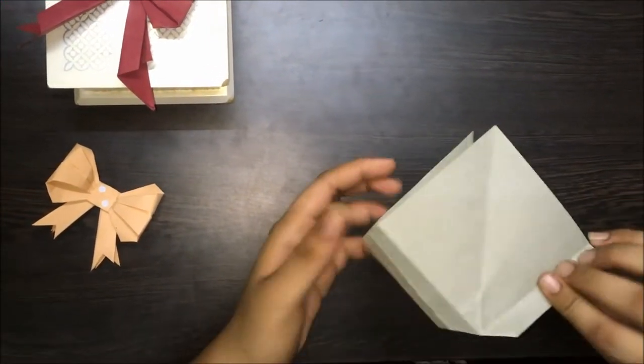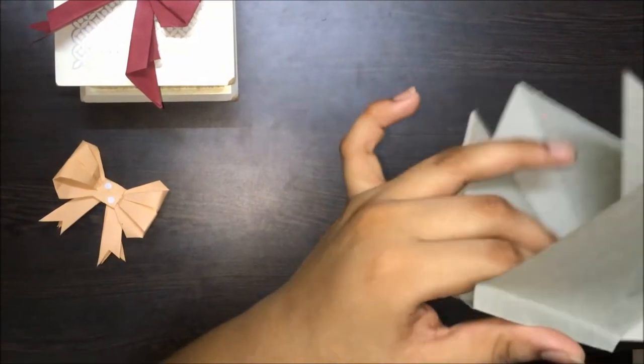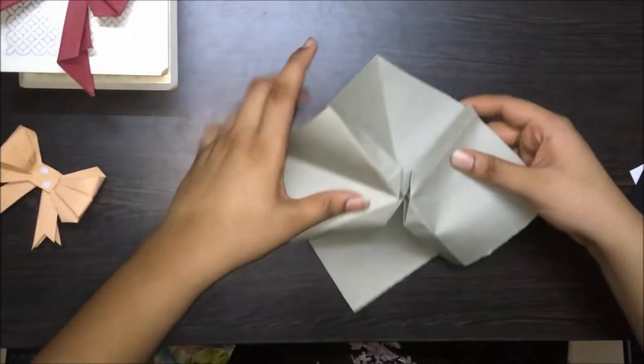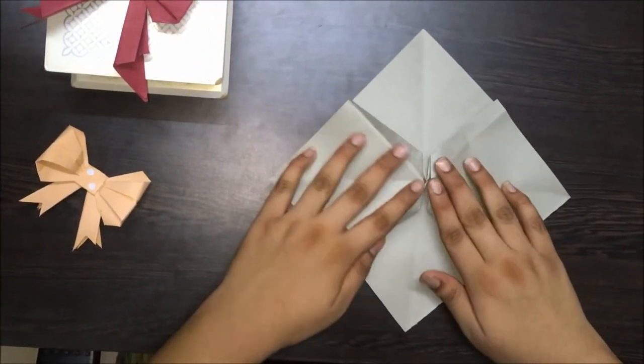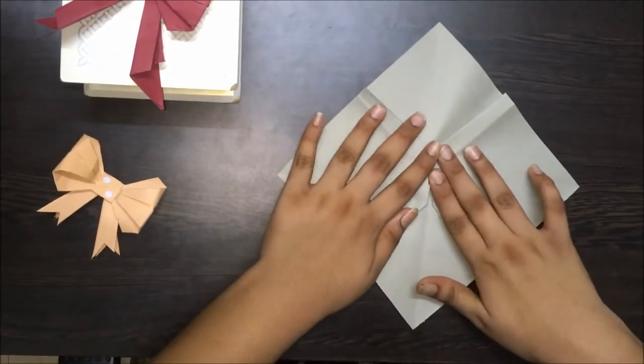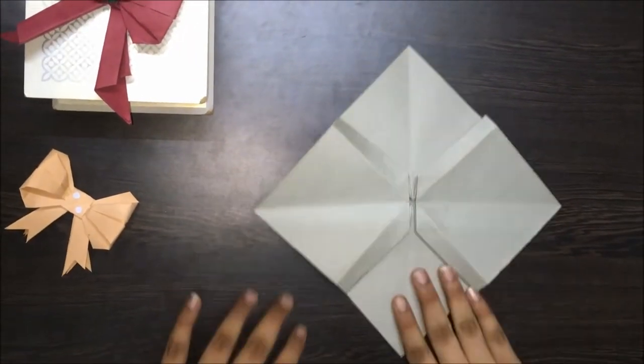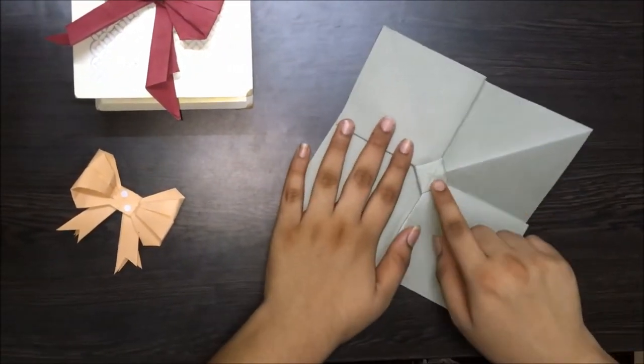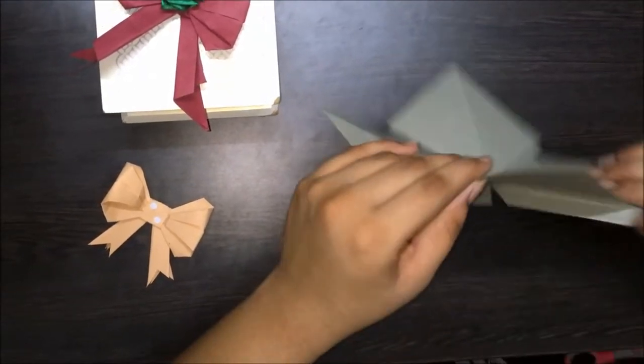Now let's open it up. Open this up and press it down. This is the square of our bow. Now flip it over.